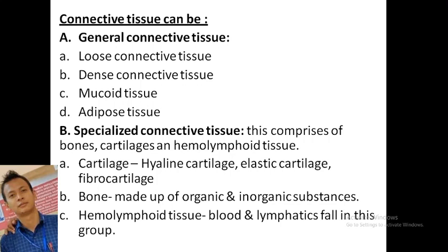The types of connective tissue we mostly see include loose connective tissue, dense connective tissue, adipose tissue, and specialized connective tissue. Specialized connective tissue comprises bone, cartilage, and hemopoietic tissue. Cartilage includes hyaline cartilage, elastic cartilage, and fibrocartilage. Bones are made up of organic and inorganic substances. Hemopoietic tissue includes blood and lymphatic tissue.